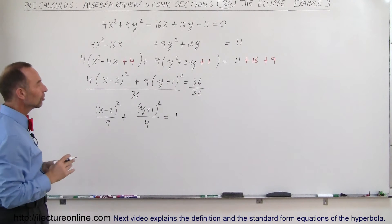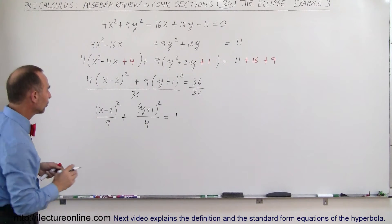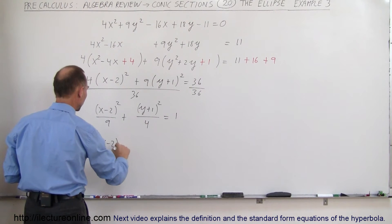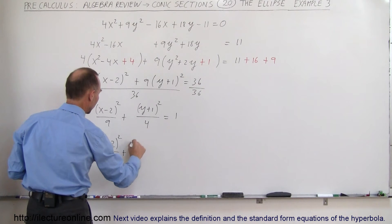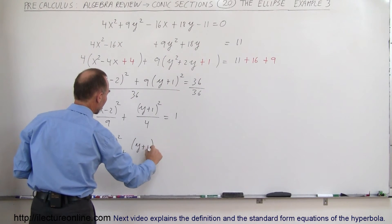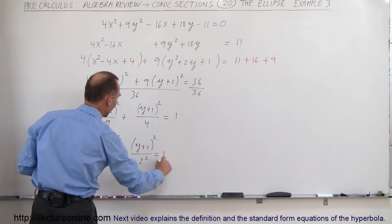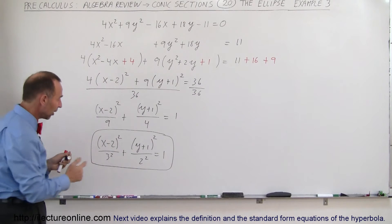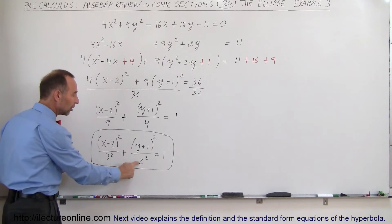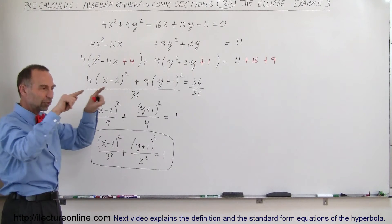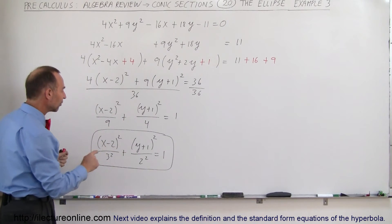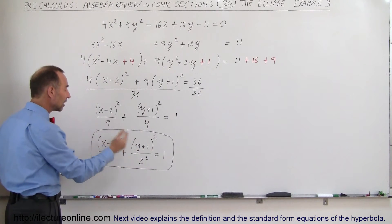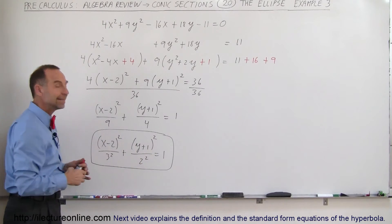We're getting closer to standard form. The next step is to write the denominators as numbers squared: (x minus 2) squared divided by 3 squared, plus (y plus 1) squared divided by 2 squared, equals 1. That is now standard form. Notice that the number underneath the x-term is bigger than the number underneath the y-term, which means the ellipse is sideways. The center is at x equals 2 and y equals negative 1 — that is, h equals 2 and k equals negative 1.